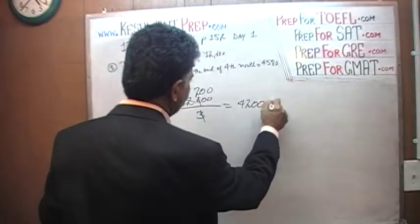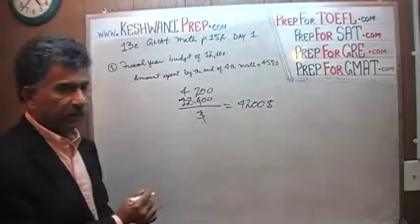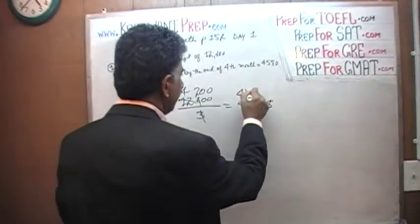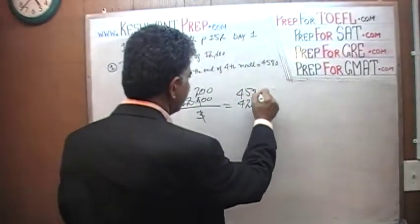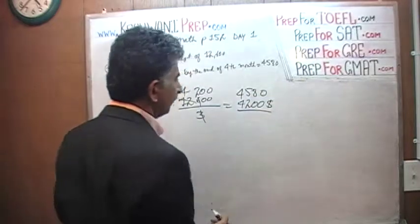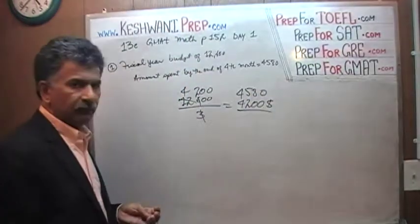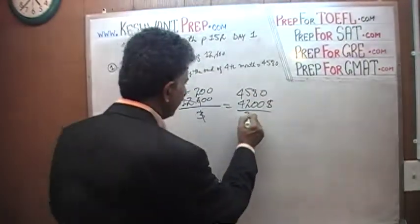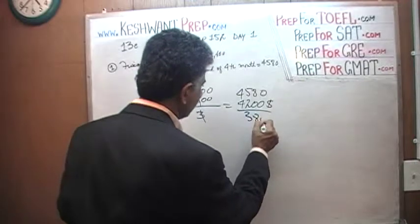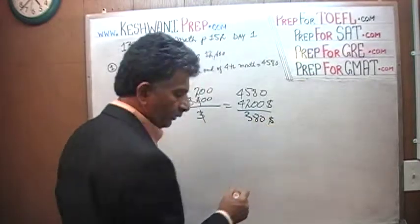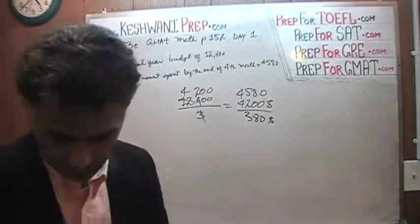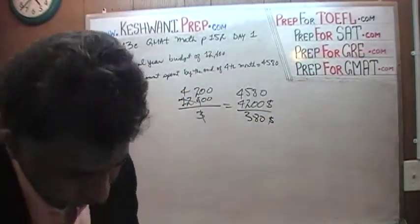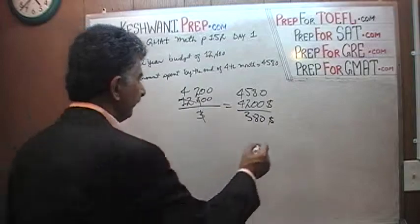They were supposed to spend $4,200, but in reality they have already spent $4,580. Therefore, they have $380 over budget — which is answer A.